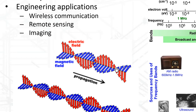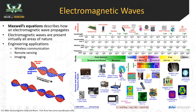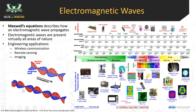Moving electric charges can generate magnetic fields, and moving magnetic fields can initiate voltages. That's why electric and magnetic fields, when in AC mode as opposed to DC mode, become coupled. A static field — one not changing with time — means electric and magnetic fields are completely independent of each other. But when the fields are varying in time they become coupled and play off each other.